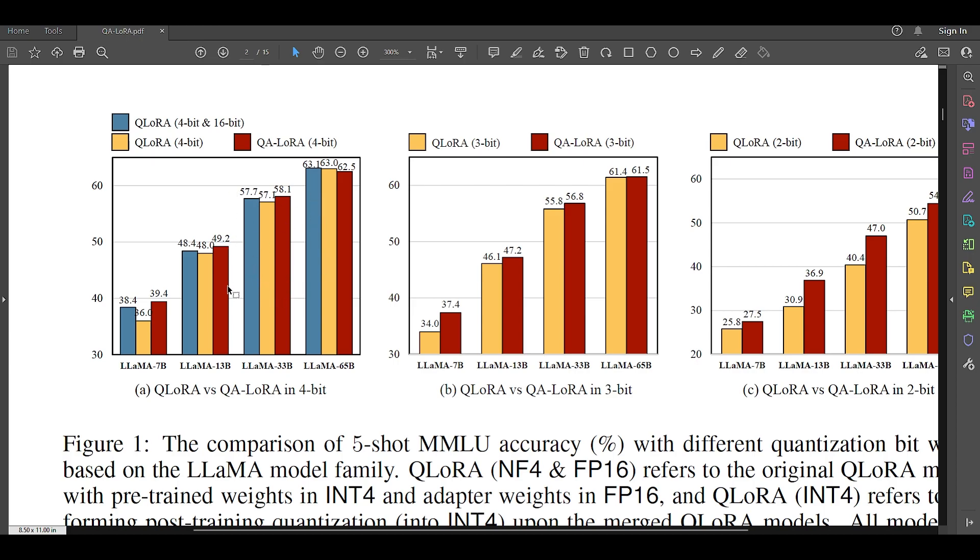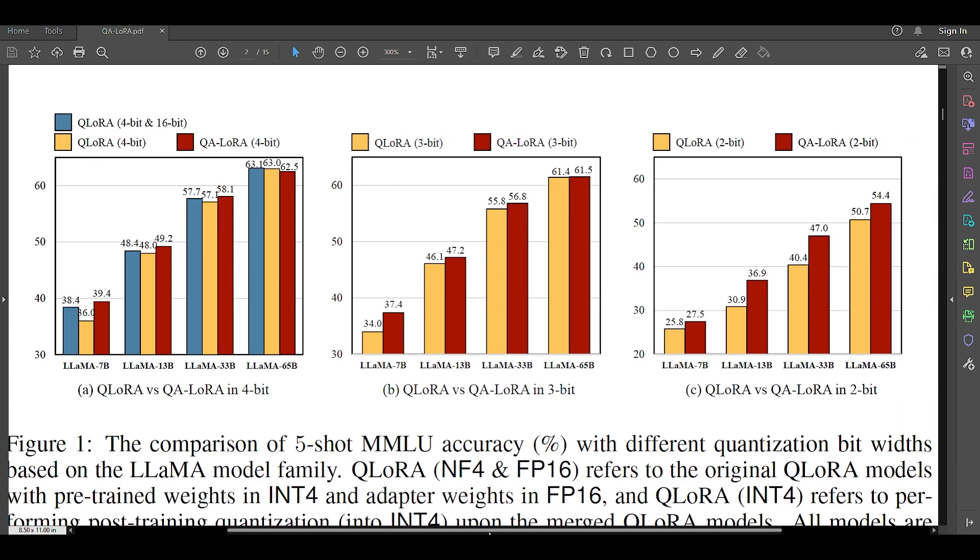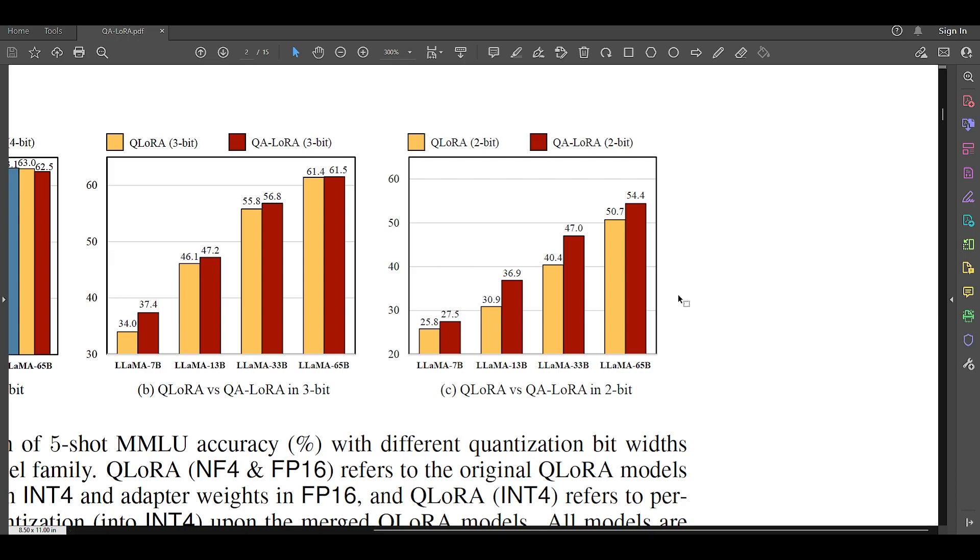And then, now for the left side graph, which is for the 4-bit evaluation between Q-LoRA and QA-LoRA, here the QA-LoRA is slightly lower performing. The performance is slightly lower, 62.5 versus 63.0 for Q-LoRA. But, let's look at the even lower bit, that is at 2-bit, here is where QA-LoRA really shines. Here, 54.4, which is a much improved performance of QA-LoRA compared to 50.7 for Q-LoRA.